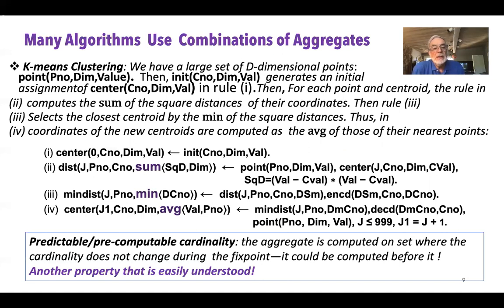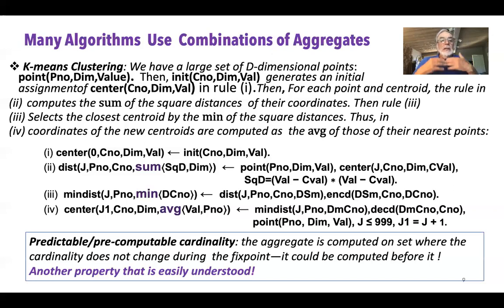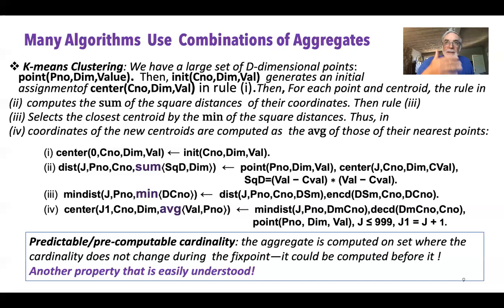One interesting aspect of this program is that we use a fixed number of centroids and a fixed number of points. Thinking about the count-based stable model semantics, we can realize that the number of centroids and points can be computed even before the end of the recursive computation. Basically, we could use a stratified program where we first compute the max, then compute the cardinality, and then use that cardinality in the computation.